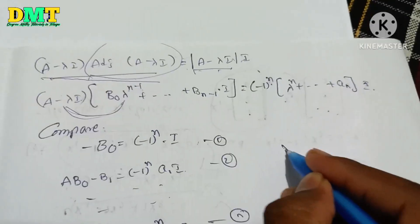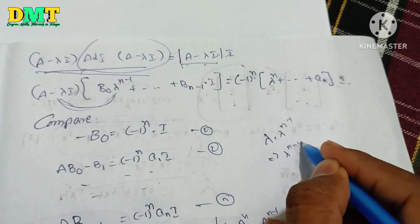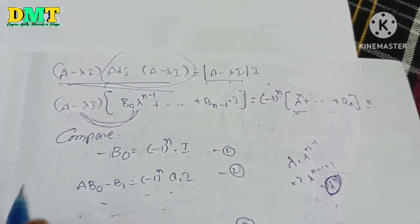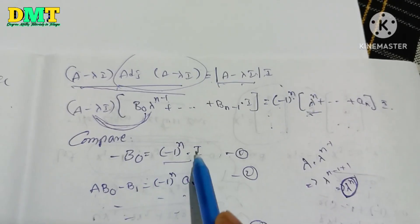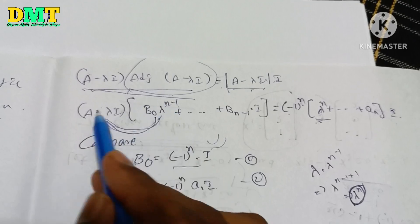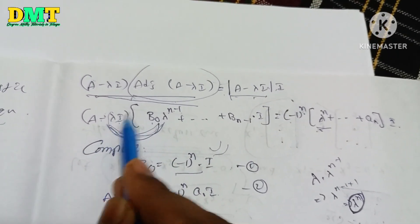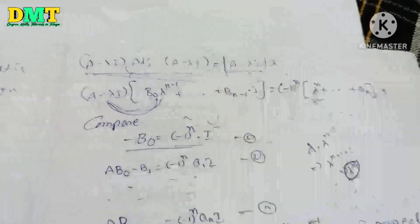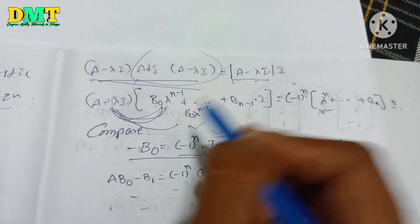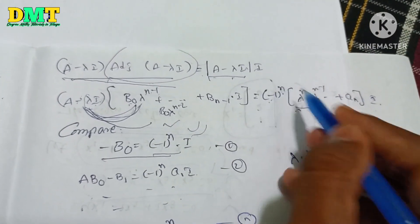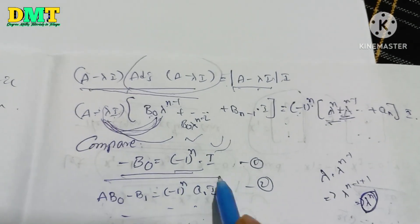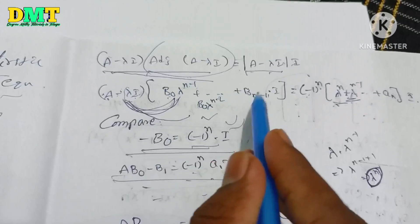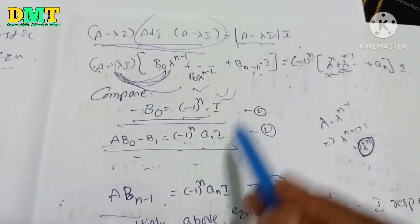Now we compare coefficients of powers of λ on both sides. The coefficient of λ^n gives: (−1)^n · I = −B0. The coefficient of λ^(n−1) gives: (−1)^n · a1·I = A·B0 − B1. Continuing down, the last equation gives: A·B(n−1) = (−1)^n · an · I.